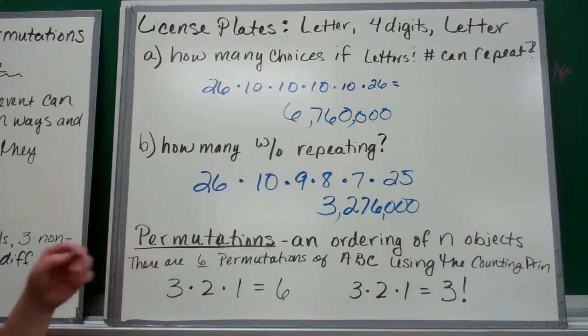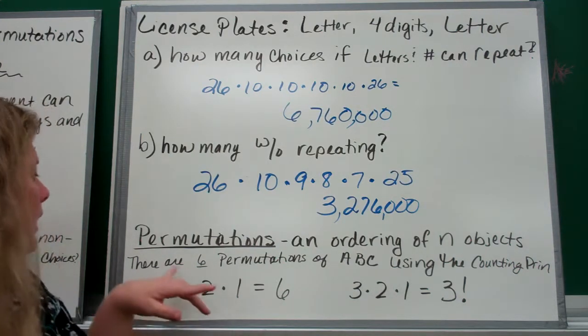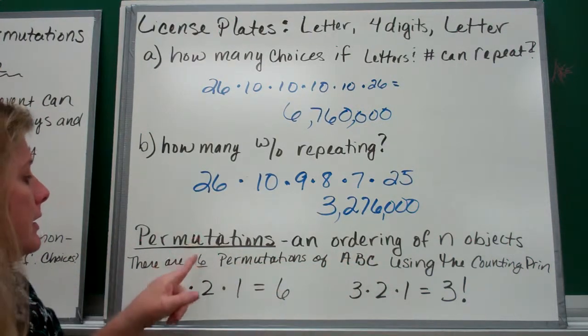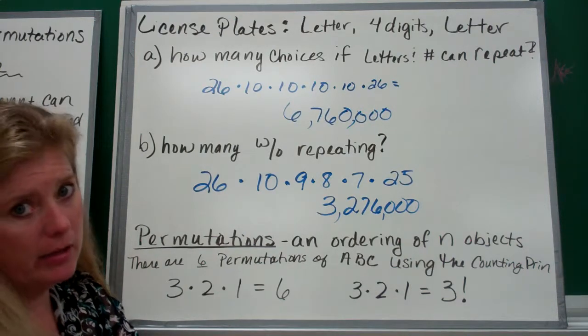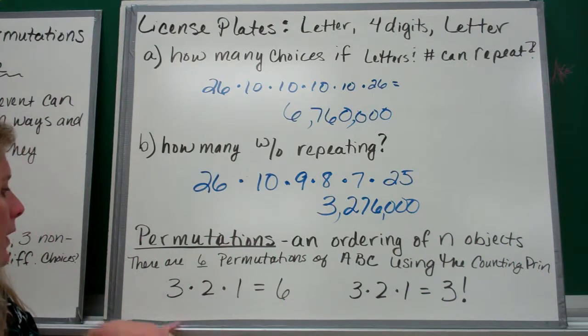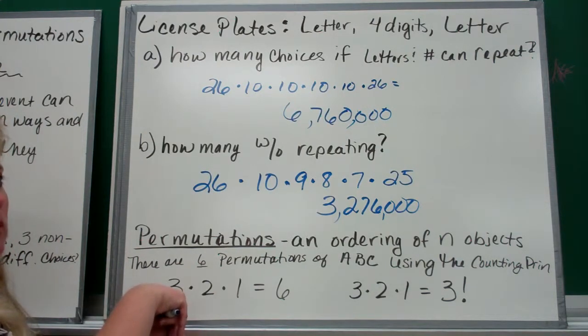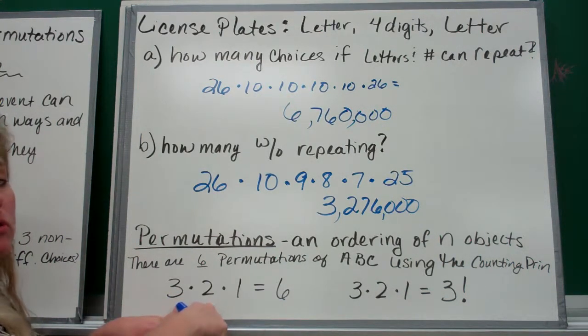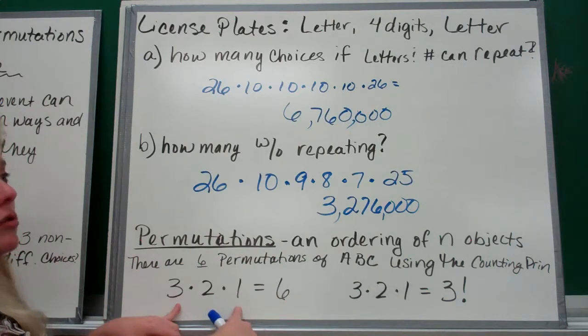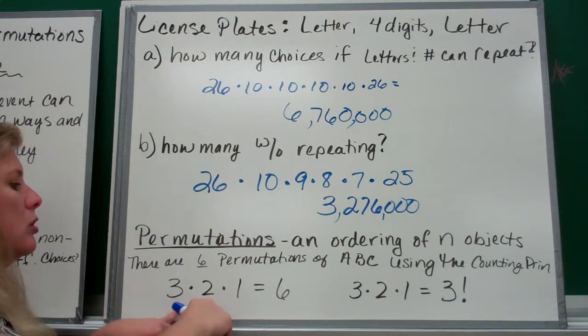Permutations. A permutation is an ordering of n objects. Let's say I take the letters a, b, and c. There are six different ways I can list the letters a, b, and c. Using the counting principle, there are three ways I can have for my first letter, my second letter now I've only got two to choose from, and then for the third letter there's only one left. Using the counting principle, that's 3 times 2 times 1, which is 6.